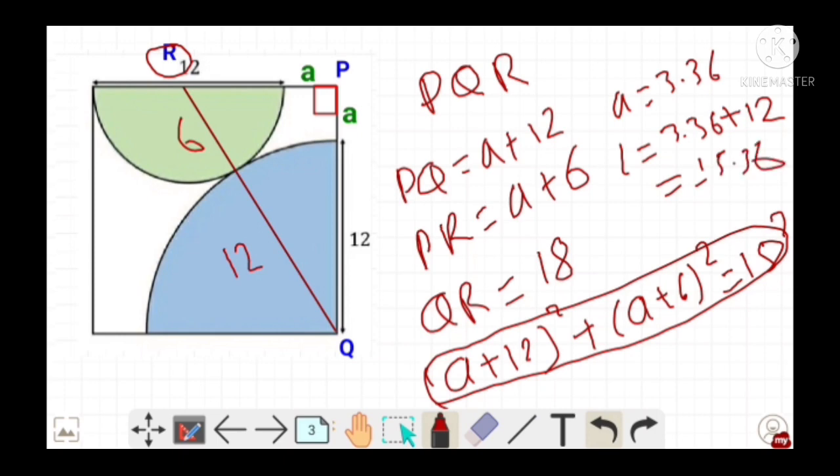Now to determine the area of the square we need to determine the value for L square which is equals to 15.36 square and which is nearly equals to 236 square units. Hence the area of the provided square is 236 square units.